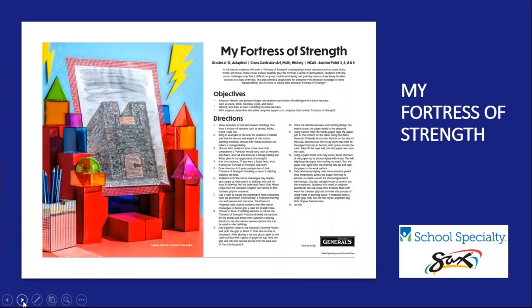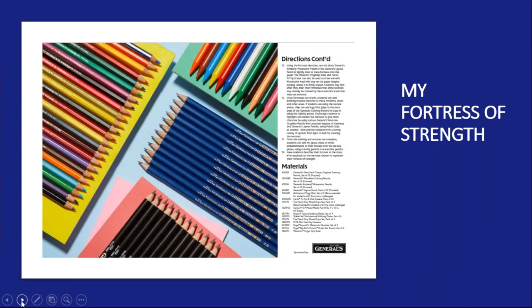Our next lesson, entitled My Fortress of Strength, is one of our adapted art lesson plans created by Sue Lysol from Milwaukee, Wisconsin, sponsored by General's Pencil Company. Students will draw a fortress of strength emphasizing various textures such as stone, brick, wood, and metal. Students with fine motor challenges may find it difficult to grasp traditional drawing and painting tools, so this plan provides adaptations for students with physical challenges to independently use our tools, creating their personal fortress of strength. The slide shows our lesson plan layout featuring various General's Pencils, along with the full directions and materials list.